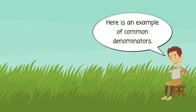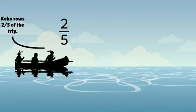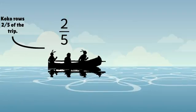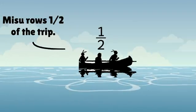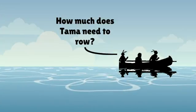Here is an example of common denominators. Koko rows 2-5ths of the trip while Misu rows 1-2 of the trip. How much does Tama need to row?